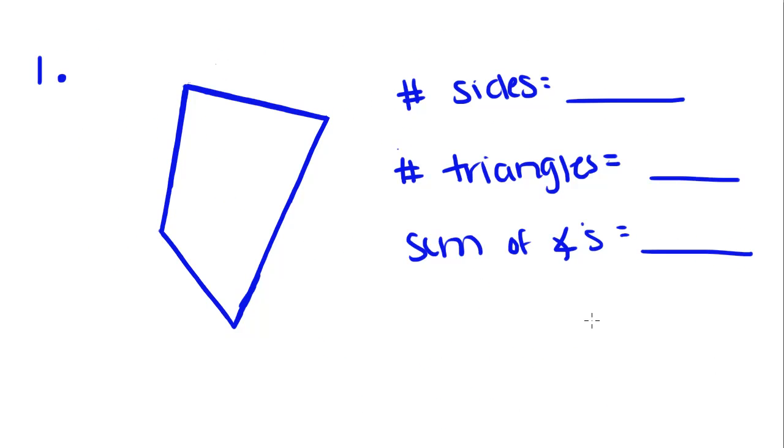This polygon has one, two, three, four sides. Pick this point, vertex A, and draw all possible diagonals in. I only get two triangles.